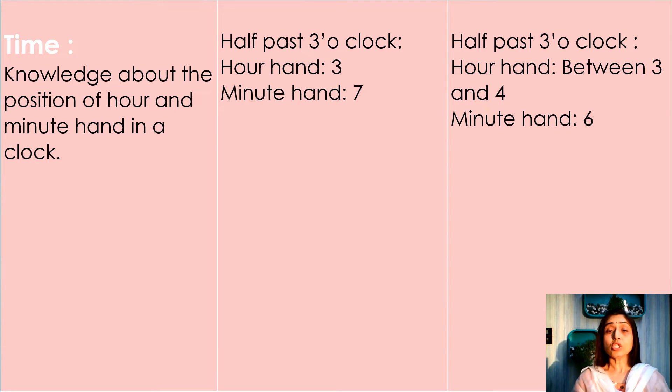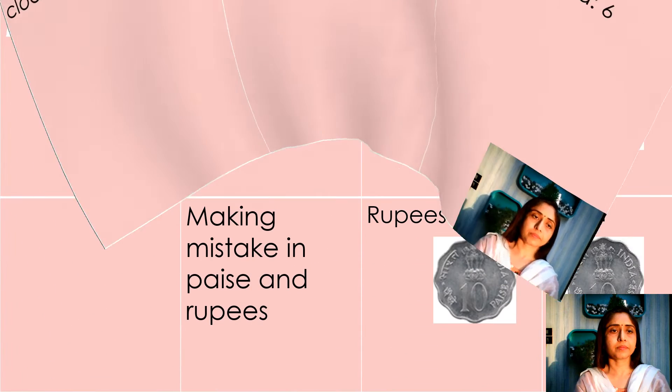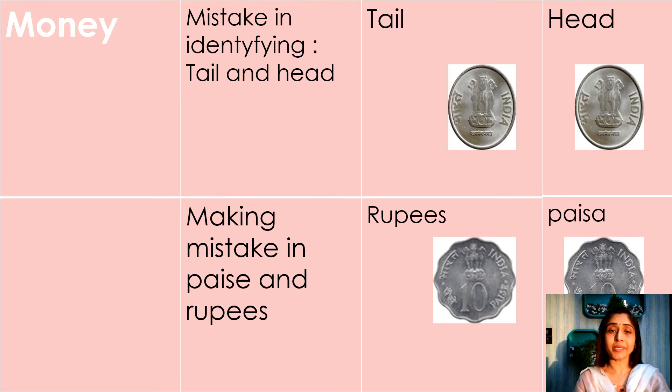But instead of that, students make mistakes - hour hand on 3 and minute hand on 7. Chapter money - mistake in identifying tail and head. Instead of tail they say head. Making mistake in paise and rupee. Instead of rupee they say it's paise.